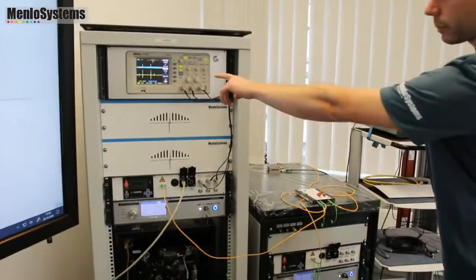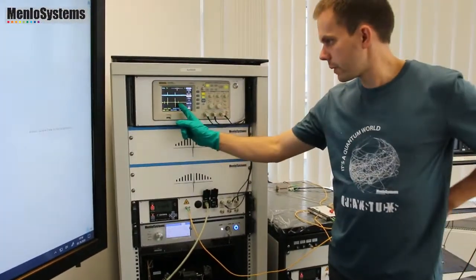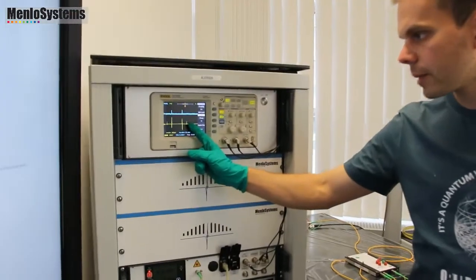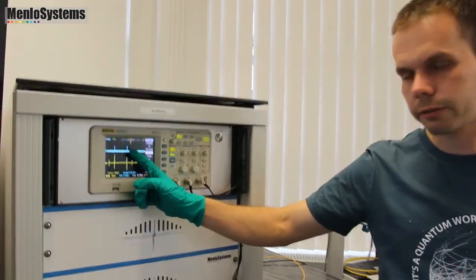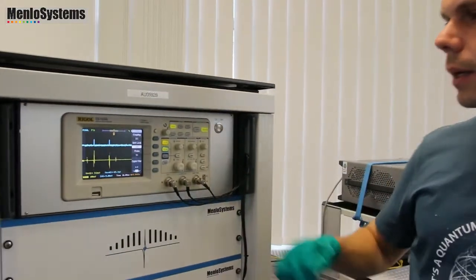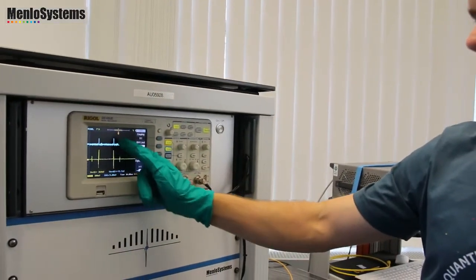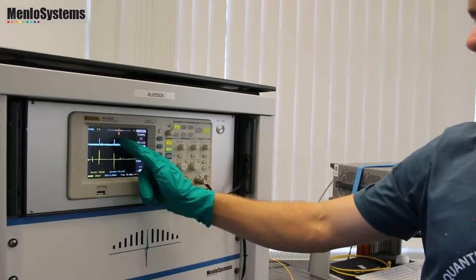That's why here we see the PDH error signal. So this is the main mode and this is the sideband. And here the pattern just repeats. And you see here the transmission photodiode signal. And what we see is that you have transmission on the main mode but of course not on the sideband.